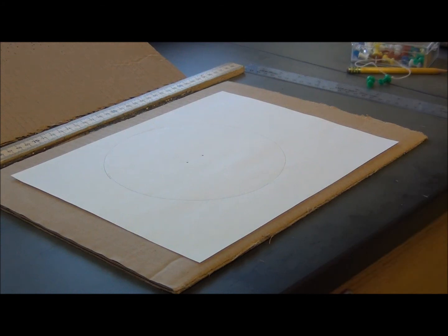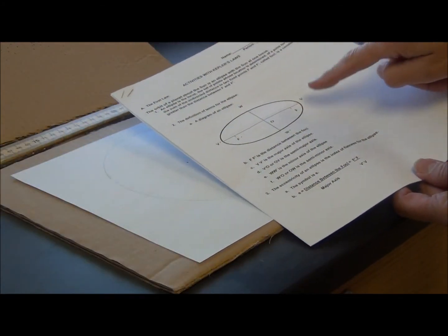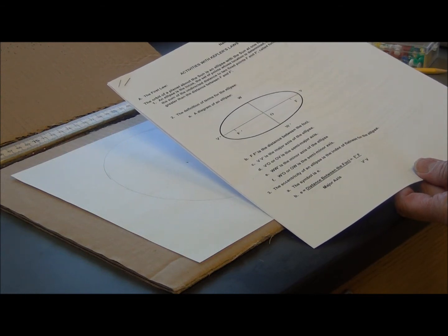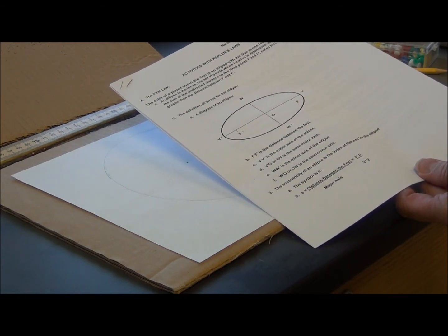You're going to label your diagram exactly as the sketch on the lab, with F, F', V, V', W, W', and O. And that's it!